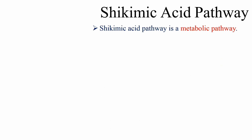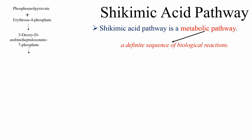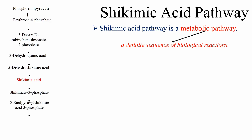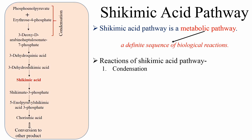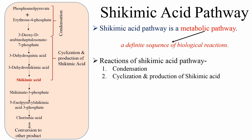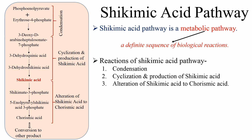Here we will begin with the introduction. Shikimic Acid Pathway is a metabolic pathway. A metabolic pathway means a sequence of biological reactions. The reactions of Shikimic Acid Pathway can be divided into four parts: condensation reaction, cyclization and production of Shikimic Acid, alteration of Shikimic Acid to Chorismic Acid, and conversion of Chorismic Acid to other products.